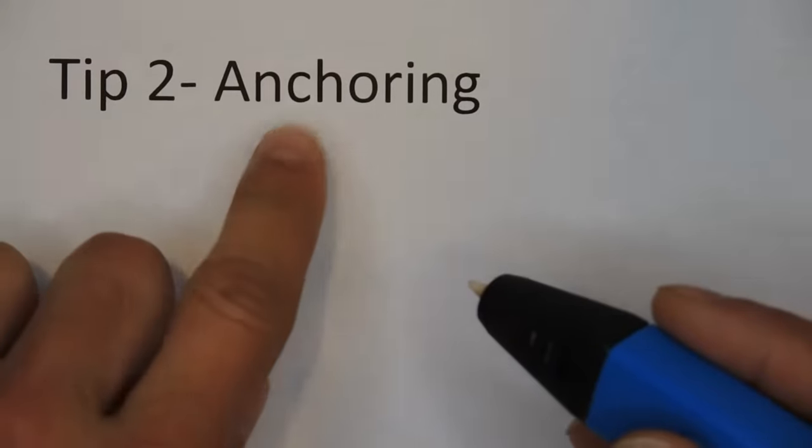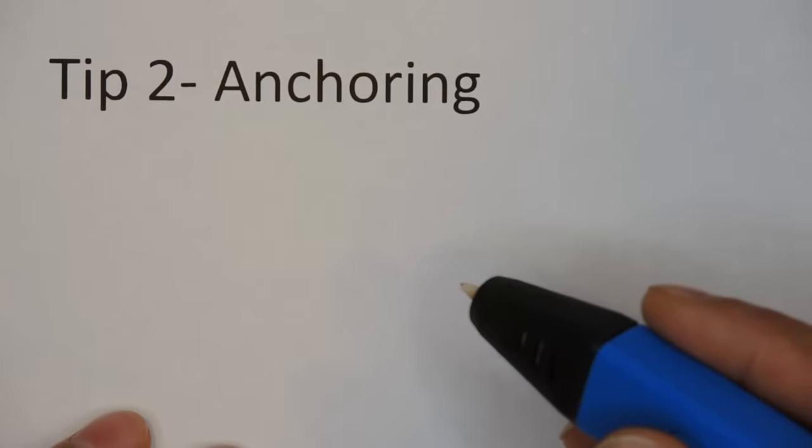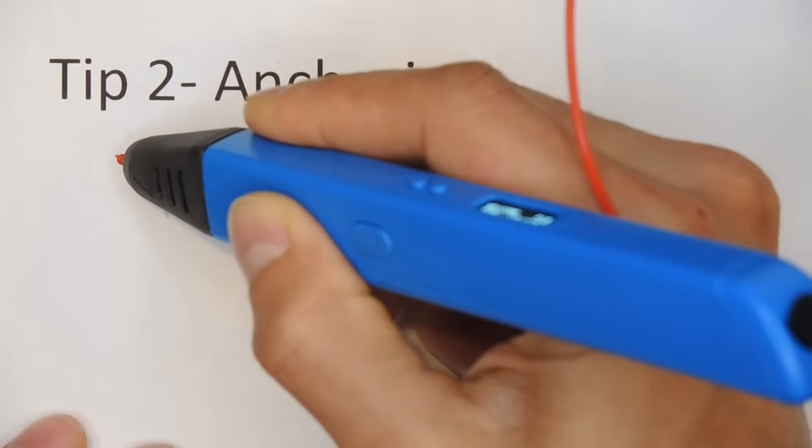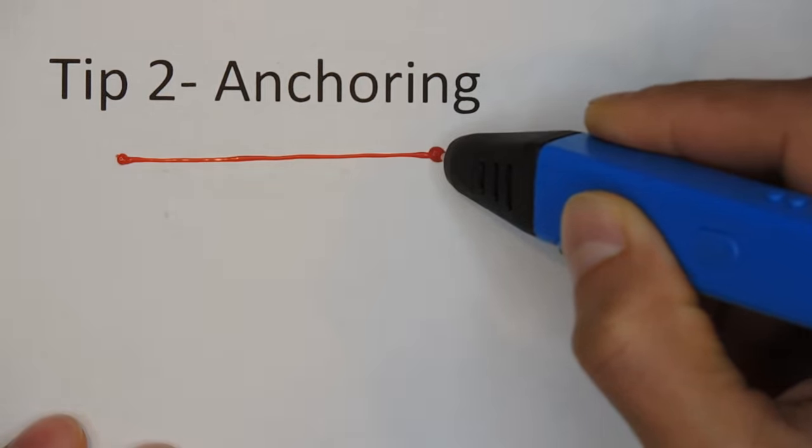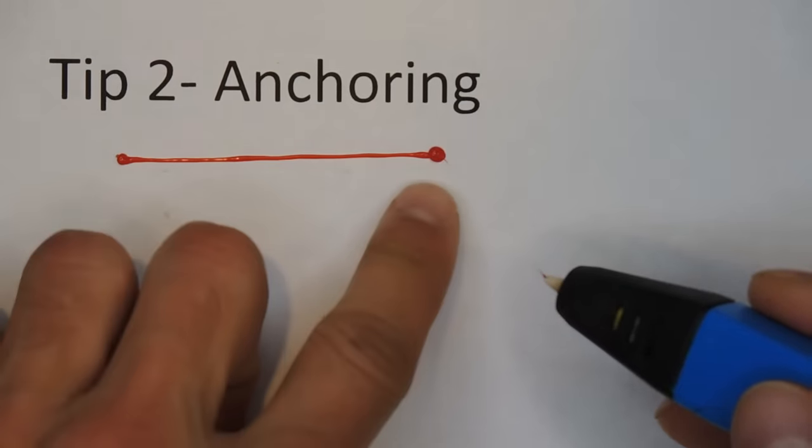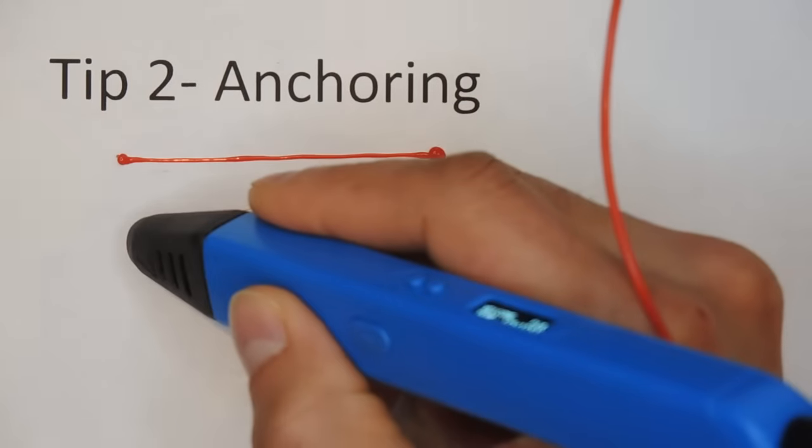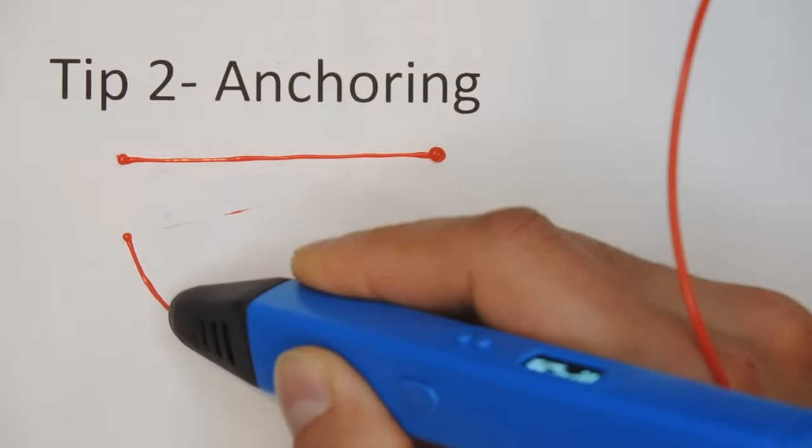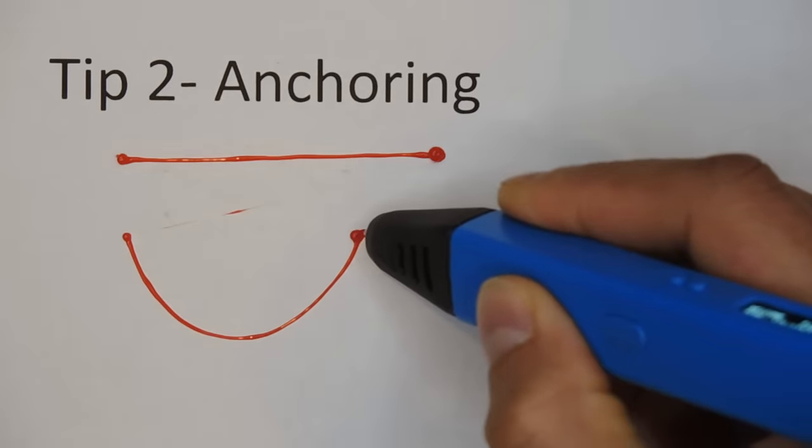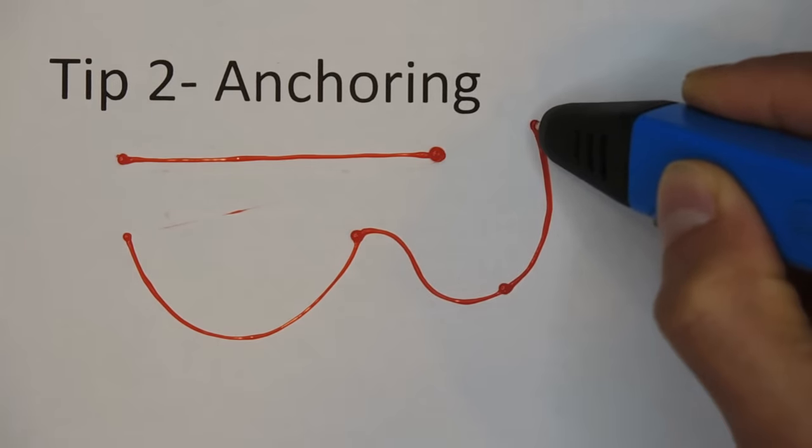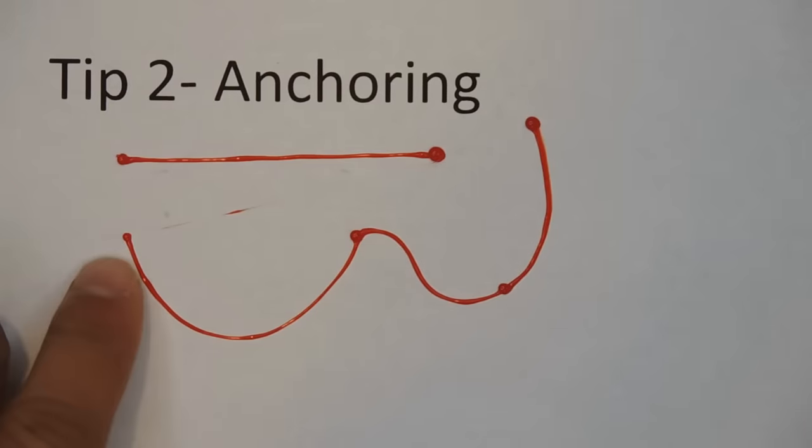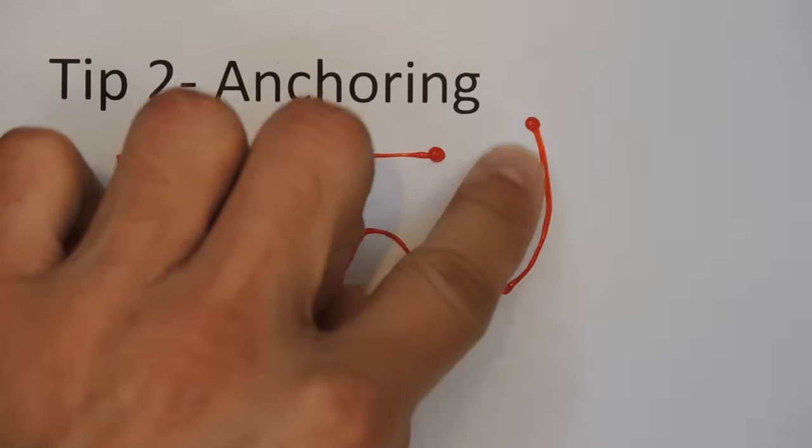The second tip is about anchoring. If you're having trouble getting your lines to stick to whatever you're penning on, try using more anchor points. What I mean by this is the following. When you start a line, pause as you extrude some plastic to allow a small anchor point to build up. Then go ahead and make your line. Once you reach the end, pause again to allow another anchor point to form. The anchor points help to keep the plastic stuck to whatever you're penning on. In addition, if you're trying to make a long line, you can pause at points along the way to make anchor points that will help hold it in place.